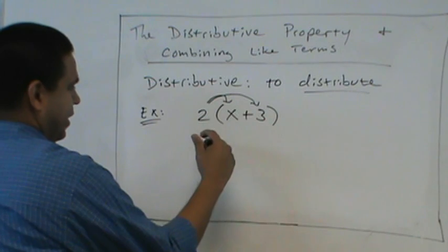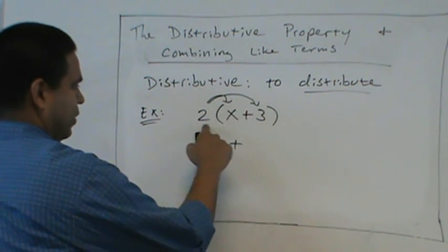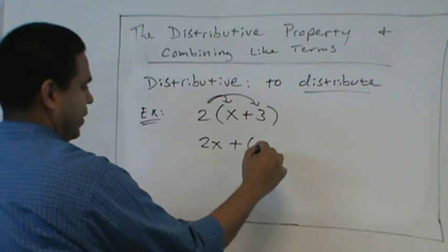So 2 times x? Would be 2x. And 2 times 3? Would be 6.